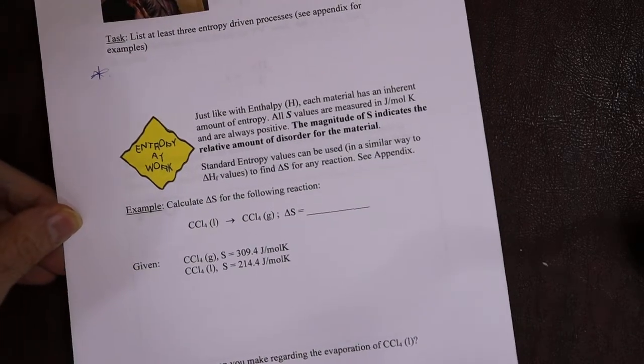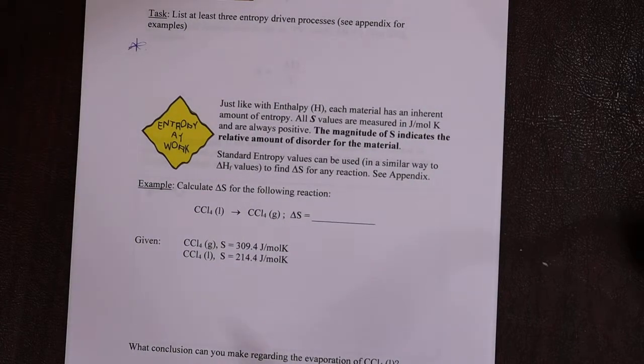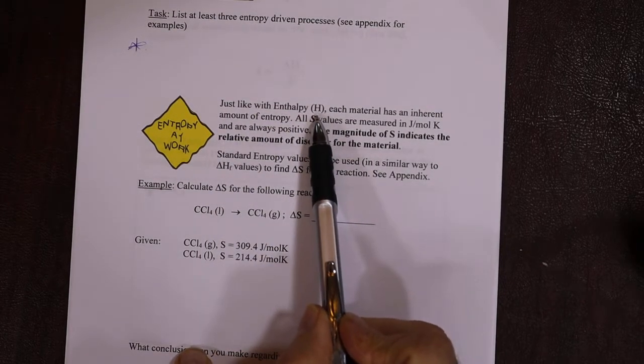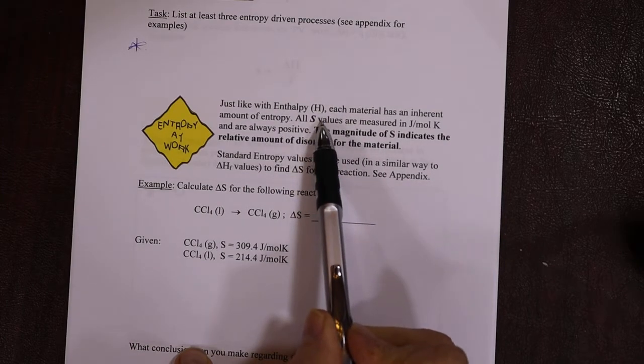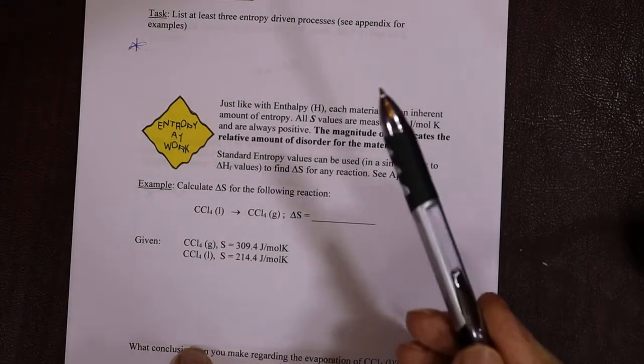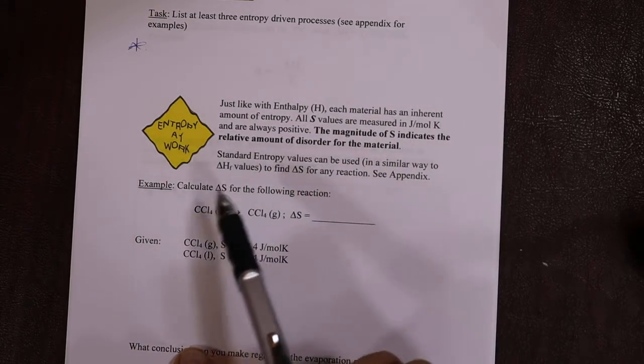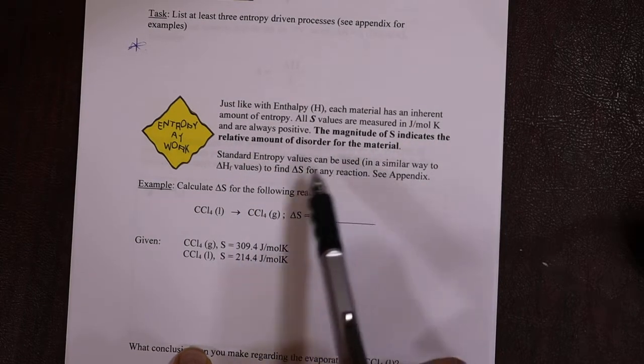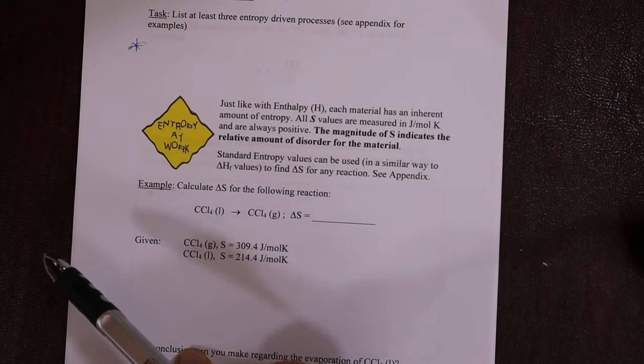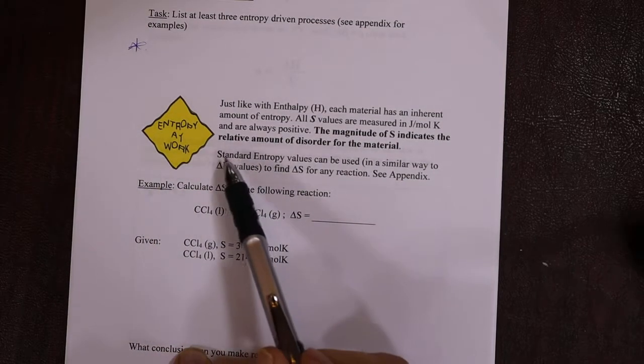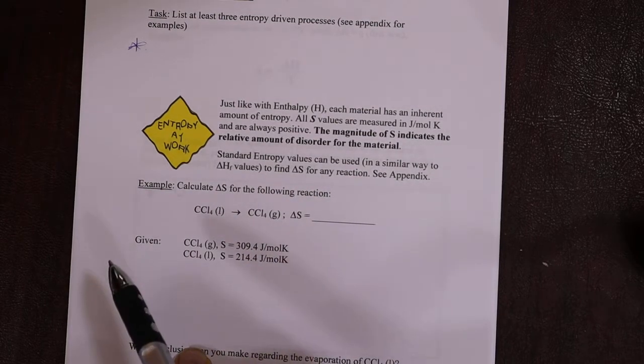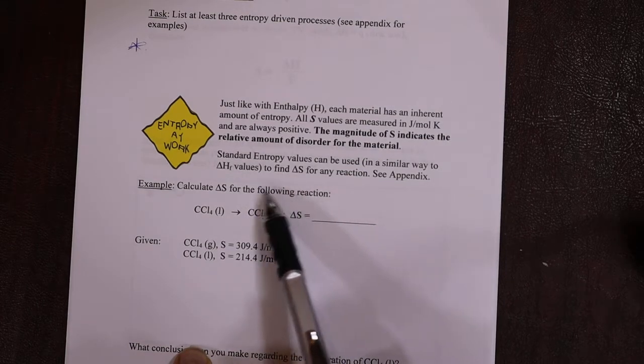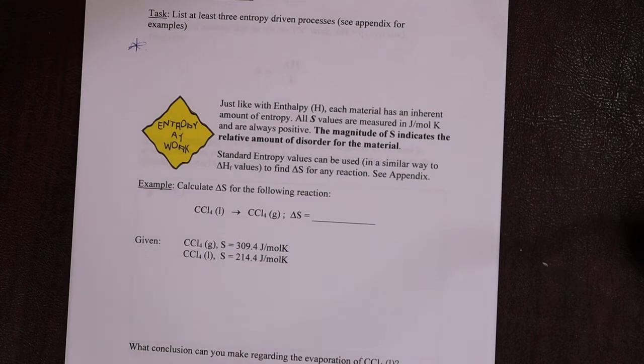Now put some math together for this. So the numbers, we talked about it a little bit. Final minus initial is change. So just like with delta H, same thing works for delta S. So each material will have its own inherent amount of disorder. Solids are low, liquids are higher, gases are the most. The magnitude of that number tells you the level of disorder. So if you want to do a change, it's just final minus initial, just like heats of formation in the back of the book, there are standard enthalpies in the back of the book. So you can just look them up.